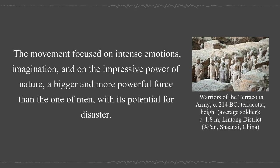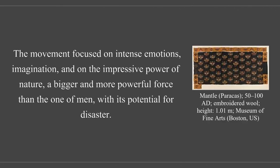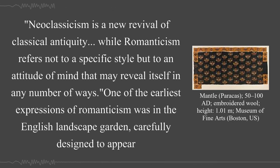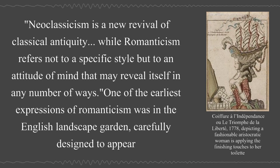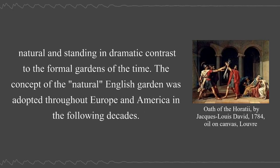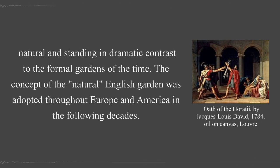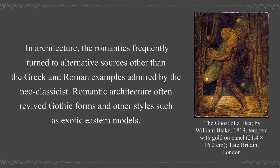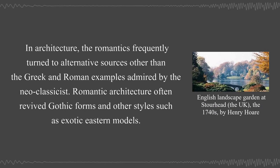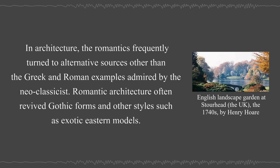The movement focused on intense emotions, imagination, and on the impressive power of nature — a bigger and more powerful force than that of men, with its potential for disaster. One of the earliest expressions of Romanticism was in the English landscape garden, carefully designed to appear natural and standing in dramatic contrast to the formal gardens of the time. The concept of the natural English garden was adopted throughout Europe and America. In architecture, the Romantics frequently turned to alternative sources other than Greek and Roman examples, often reviving Gothic forms and other styles such as exotic Eastern models.